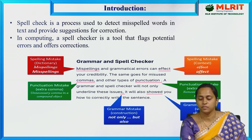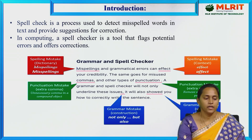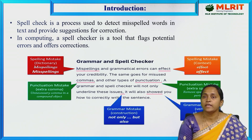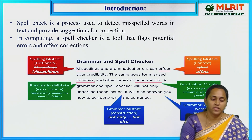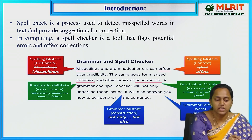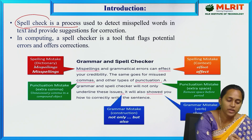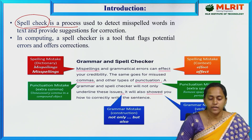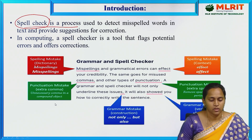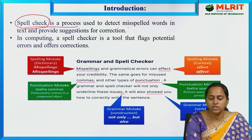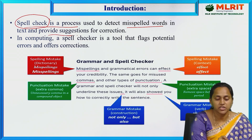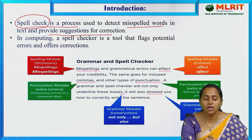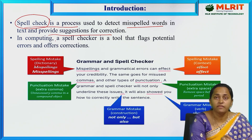Coming to the introduction: spell check is a process used to detect misspelled words in a text and provide solutions for corrections. It suggests the required correct word. Whenever computing, a spell checker is a tool that flags potential errors and offers corrections.